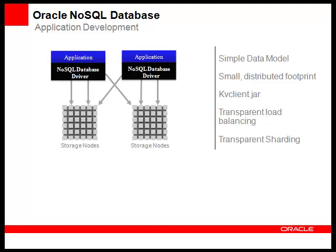Each application instance, which can of course be multi-threaded, simply needs to link in kvclient.jar as explained in the Eclipse development tutorial. Oracle NoSQL Database implements a key-value data model. The diagram also shows a number of storage nodes. A key point is that the API calls you make have no knowledge of which shard the key-value pair you wish to retrieve is actually stored.